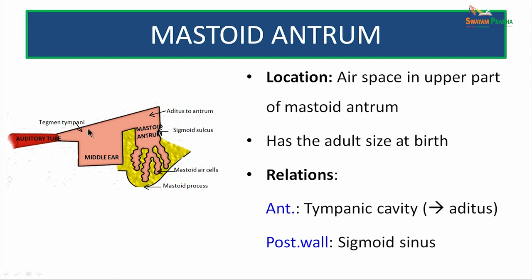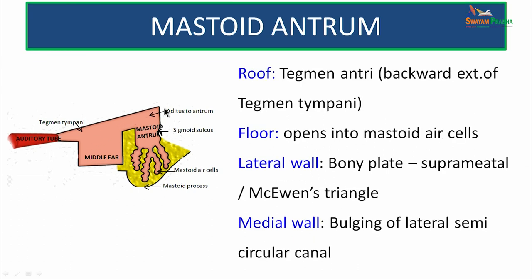The mastoid antrum is an airspace located in the upper part of the mastoid region. It reaches adult size at birth. Anteriorly it is related to the tympanic cavity through the aditus, and posteriorly to the sigmoid sinus. The roof is the tegmen antri — an extension of the tegmen tympani. The floor communicates with the mastoid air cells. The lateral wall is a bony plate known as the suprameatal (McEwan's) triangle, an external landmark identifying the mastoid antrum. The medial wall is formed by the bulging of the lateral semicircular canal.